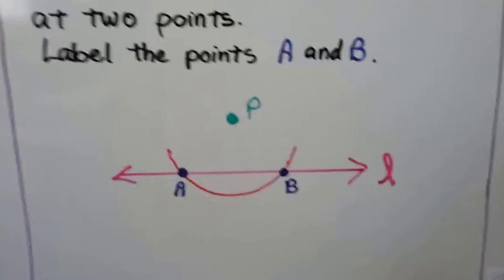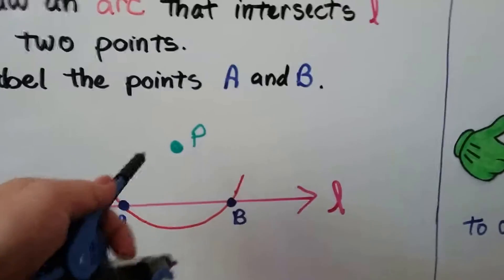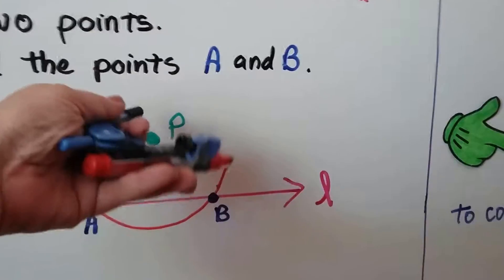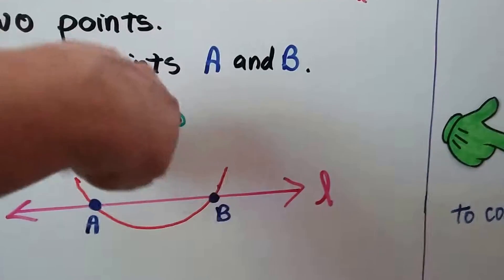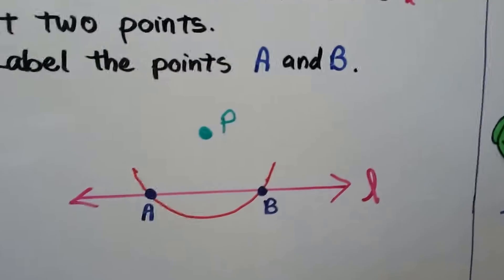So what we did was we took our compass point and we put it on P and we made an arc on L going through two spots here and here and we labeled them A and B.